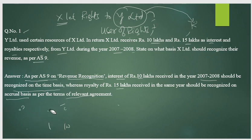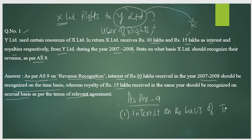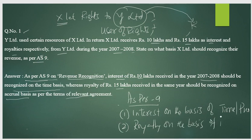To summarize the answer for question one: Number one — interest, as per AS-9, is recognized on the basis of time or proportionate. Number two — royalty is recognized on the accrual basis. These are the two answers for this question.